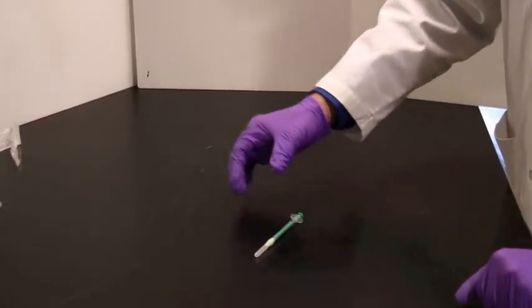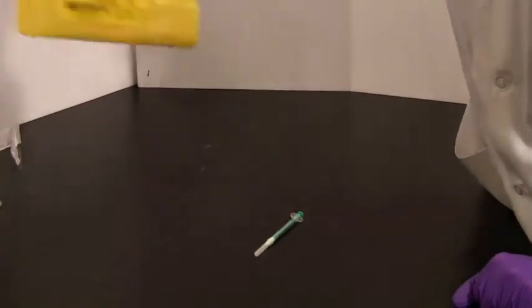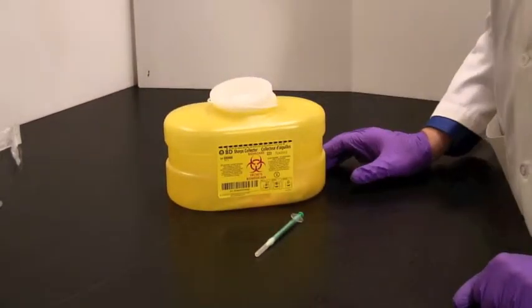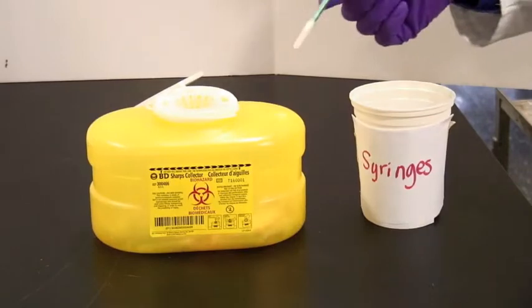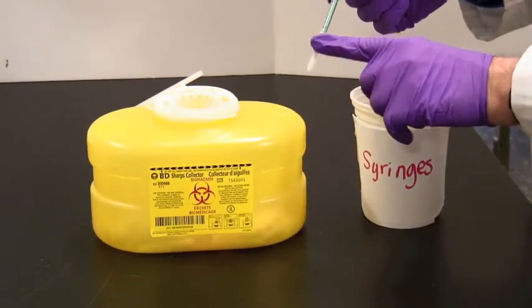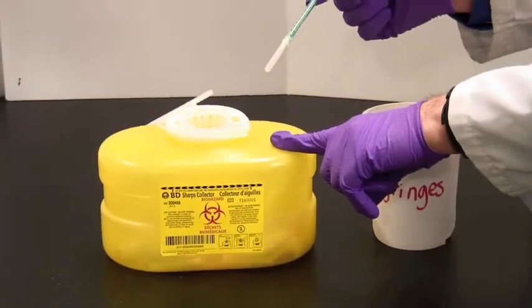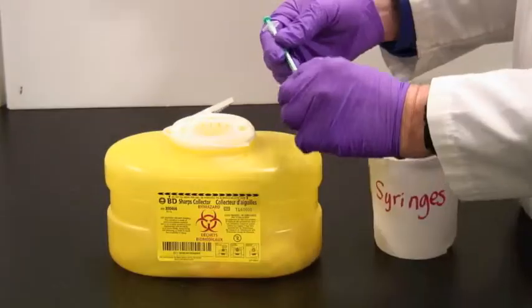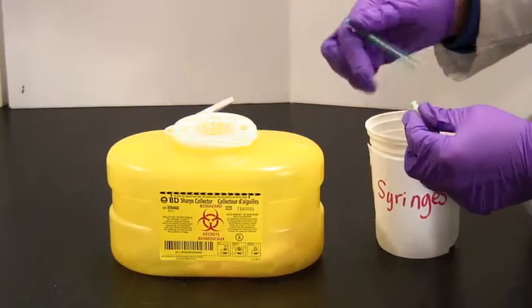Over at the TA station, you will find a bright yellow sharps disposal bucket. Once you have your syringe ready to dispose of, the needle itself goes into the sharps bin. That's this thing here. If, for some reason, the needle has come off, you can just pop it in like that.